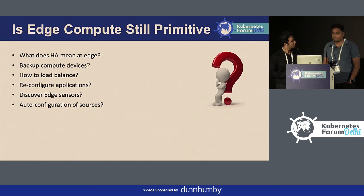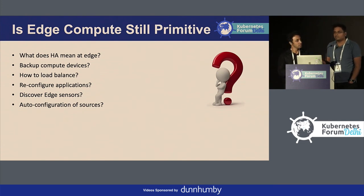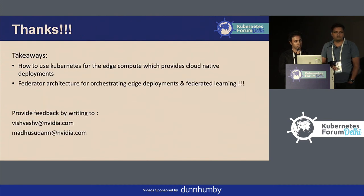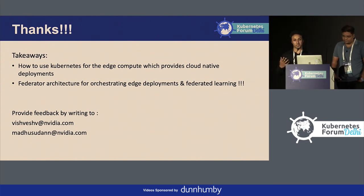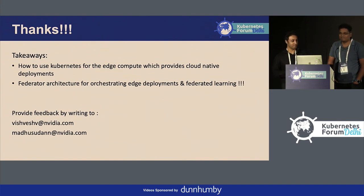This is where we are looking for community help. NVIDIA is working on AI workloads at the edge and we are exploring these solutions — it's an ongoing process. We are looking for similar contributions from the community, and we are available after this talk for a discussion. The takeaways: how to use Kubernetes for edge compute, and the federated pull-based architecture we are proposing instead of a push model. Please feel free to write back — our email IDs are on the screen. Have a nice day, thank you.